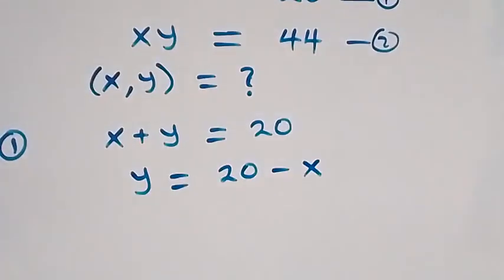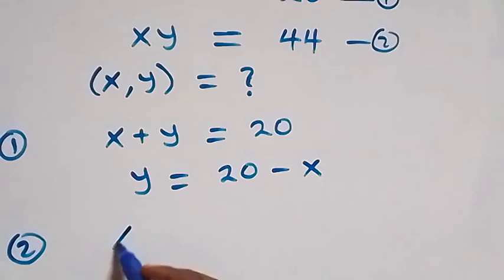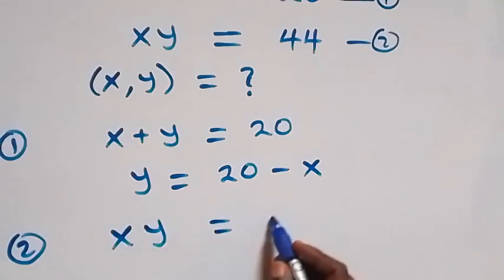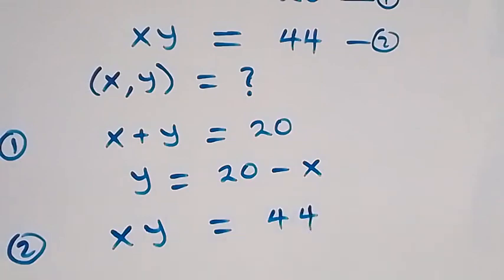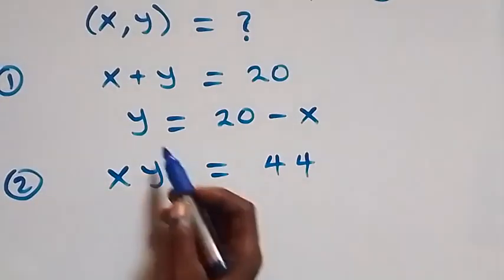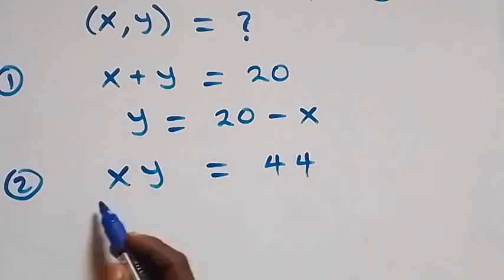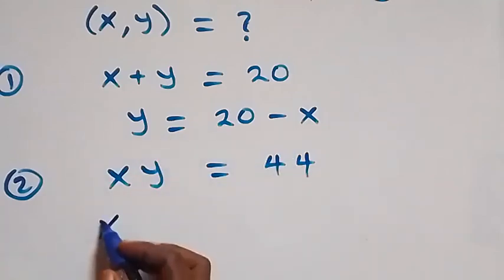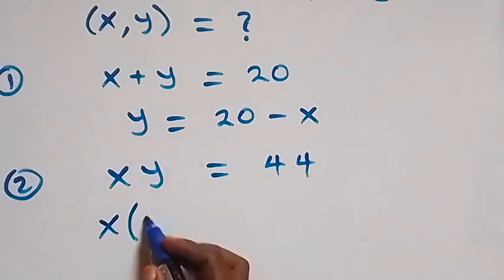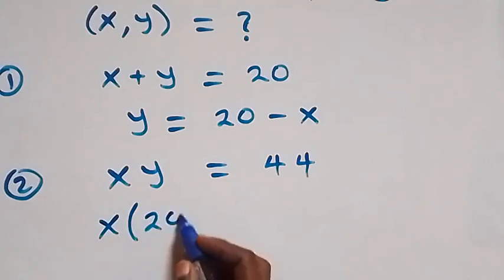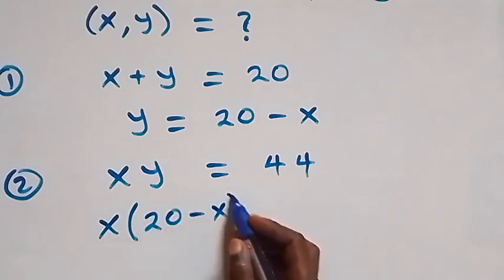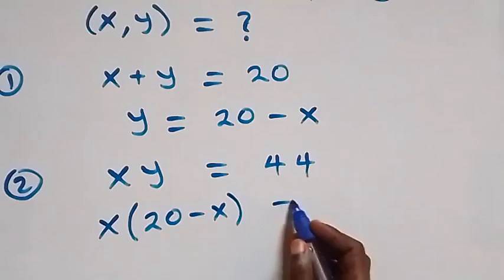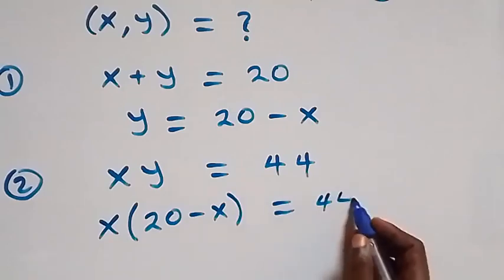From equation two we have x times y equals to 44. Then we can substitute the value of y into equation two, and we have x into bracket 20 minus x, then equals to 44.